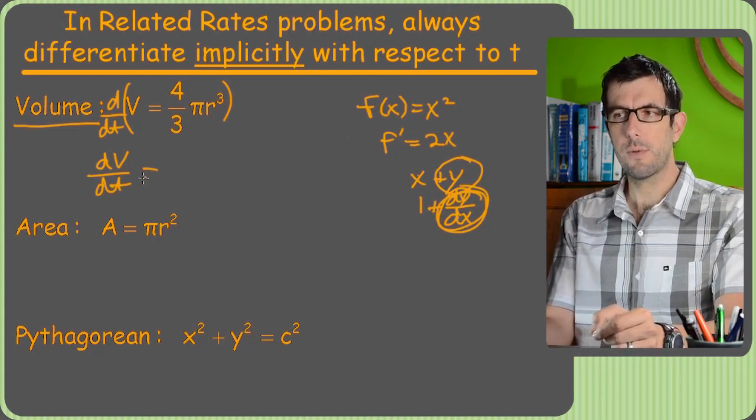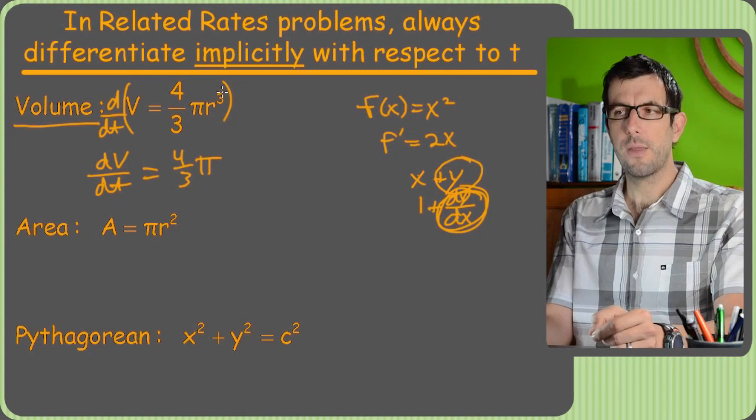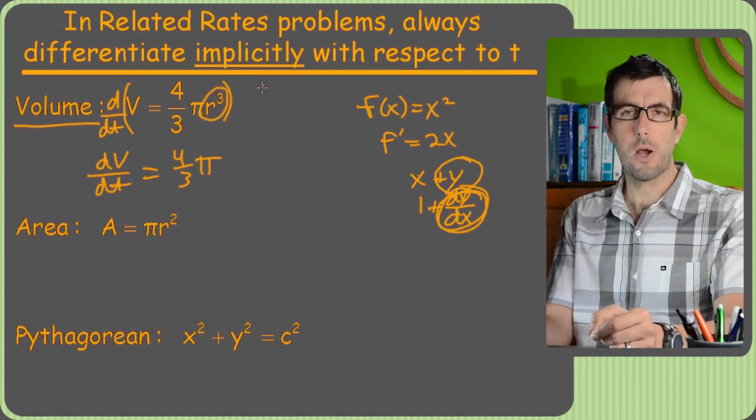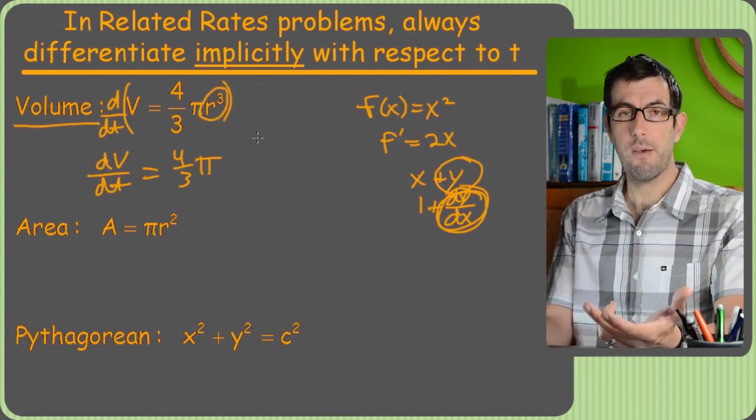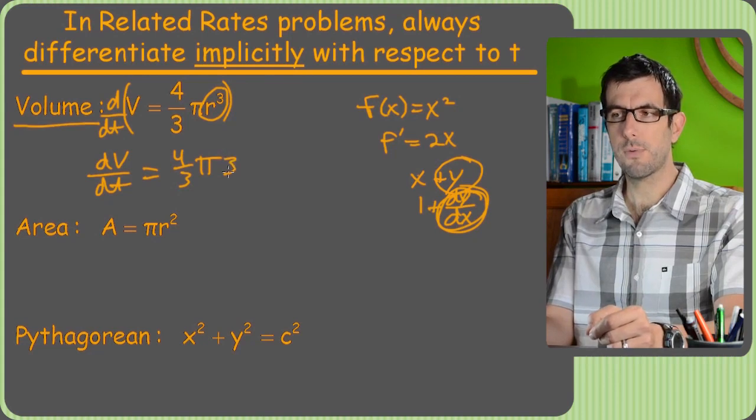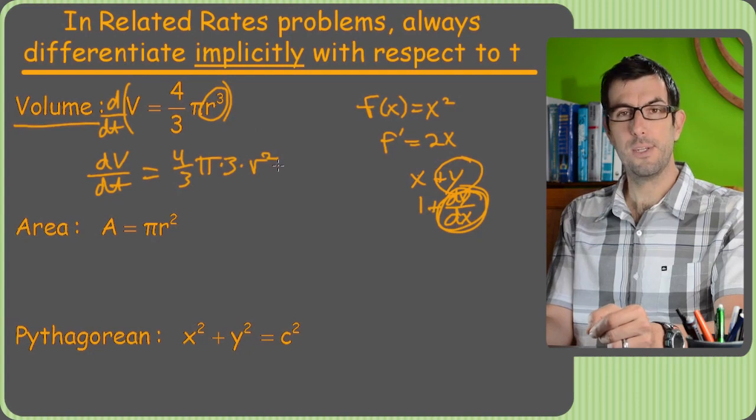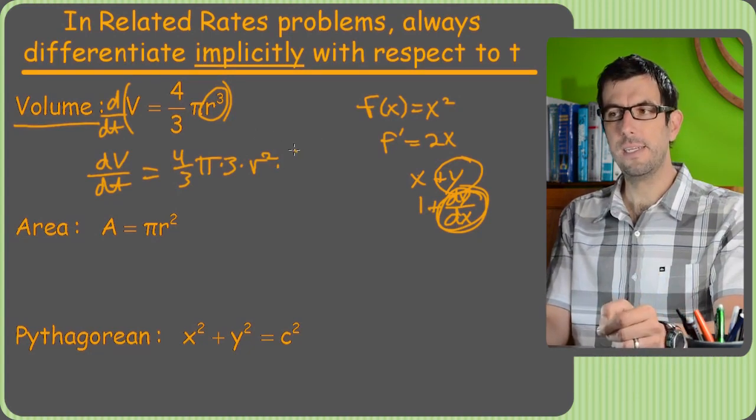So dV/dt is going to equal 4/3 pi. That's just a constant. So now the only variable on the right side is r cubed, right? What's the derivative of a power? Well, it'd be the old power, which is 3, times r squared. But then, just like implicit differentiation, I need that dr/dt next to it.